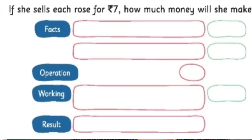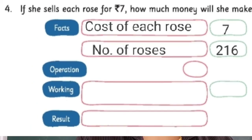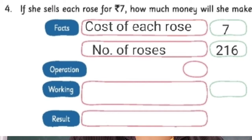The next question is: if she sells each rose for Rs. 7, how much money will she make? One rose costs 7 rupees — so in total, how much money will she make? Let's write the facts. Cost of each rose — 7 rupees. Next fact: number of roses — 216. So the number of roses is 216.